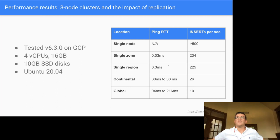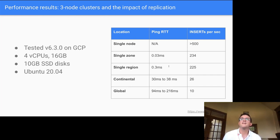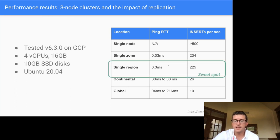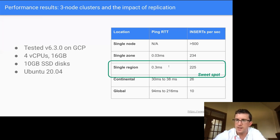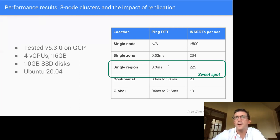The sweet spot for real systems is a single region where VMs are deployed in different zones — most cloud providers promise that every zone in a region will fail independently. This gives decent insert performance of a couple hundred inserts per second along with reliability. This is not a high-volume transactional database for storing Twitter feeds, but if you need to store important data in a relational sense with reliability, it works well.